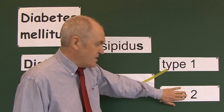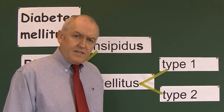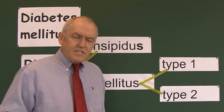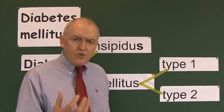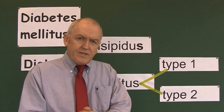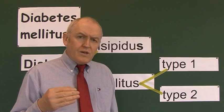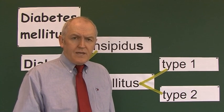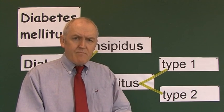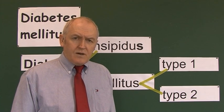So type 2 starts as a non-insulin dependent diabetes mellitus but can go on to become insulin dependent, occurring typically in later life. To summarize: type 1 is insulin dependent; type 2 can initially be non-insulin dependent but may progress to insulin dependence. Next we'll look at the background physiology of how glucose is controlled, since diabetes is a metabolic disease, and then explore the pathophysiological differences between type 1 and type 2.